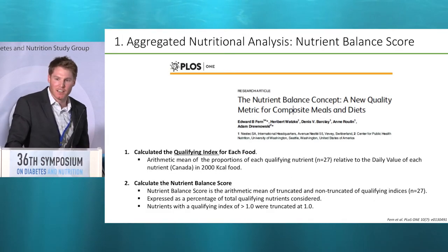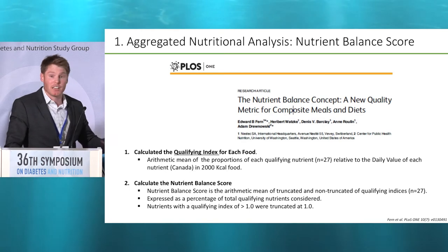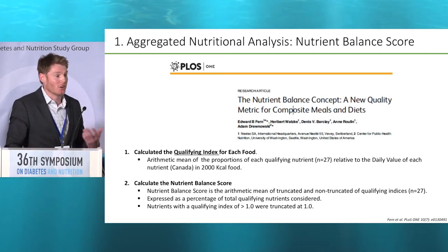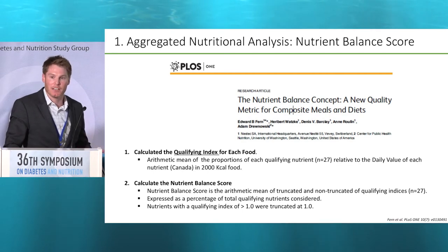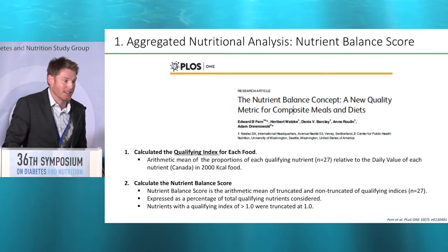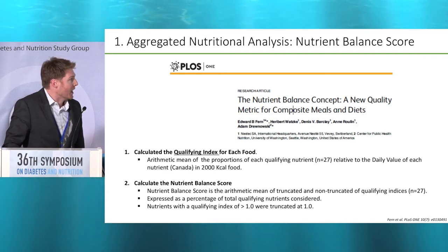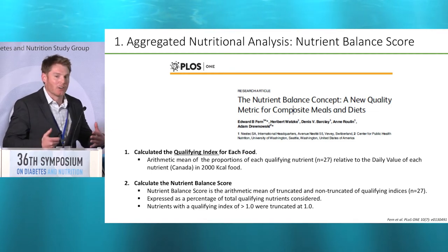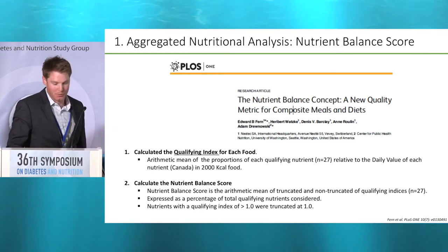For the first part of the study we wanted to look at nutritional analysis. We could have focused on protein, but given that pulses are nutrient-dense we wanted to use an aggregate score of nutrient density. We chose to use the Nutrient Balance Concept, which was developed by Nestle and Adam Dranowski at the University of Washington, and it considers 27 qualifying nutrients to aggregate a score of nutrient density for the food.